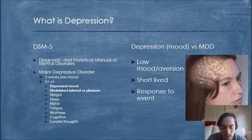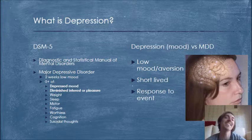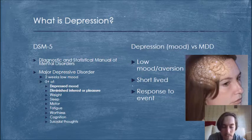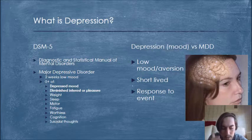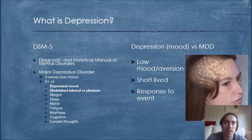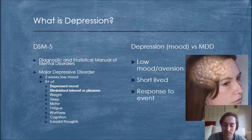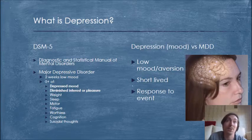It's important to note that in children and adolescents this can present as simply an irritable mood. There must also be a markedly diminished interest or pleasure in all or almost all activities most of the day, nearly every day, as indicated by either subjective account or observation. A significant weight loss while not dieting, or weight gain — for example a change of more than five percent of body weight in a month — or decreased or increased appetite nearly every day. In children, expected weight gain during maturation makes this criterion harder to apply.